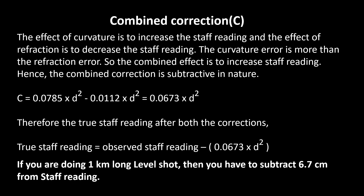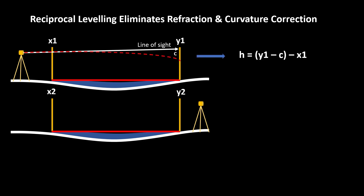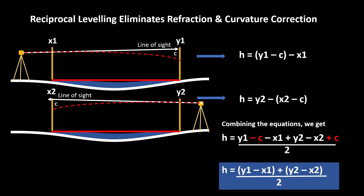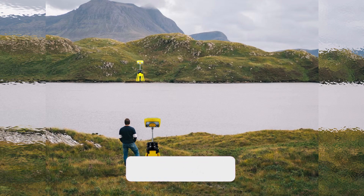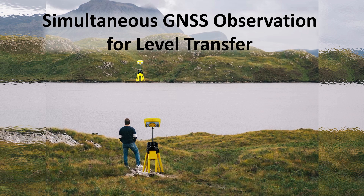In a 100 m long shot this will be 6.7 mm. In reciprocal leveling, if you incorporate the earth curvature and refraction error into the equations for observation from both sides of the river, combining the equations eliminates the combined errors of earth curvature and refraction. No matter how big the pond, lake, or river is, as long as you can correctly read the staff and do reciprocal leveling you will get accurate results. If the distance gets too big, use simultaneous GNSS observation to transfer the level — but that will be the topic of another video. Till then, keep learning.